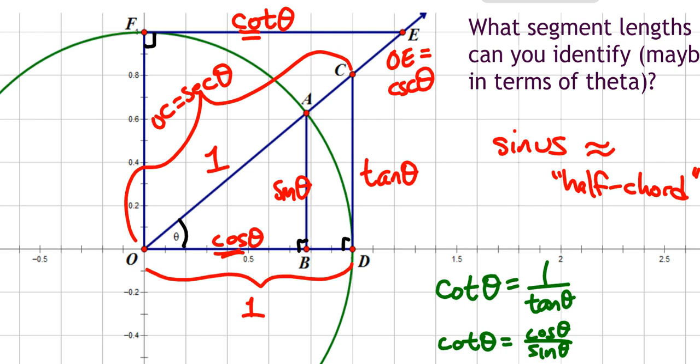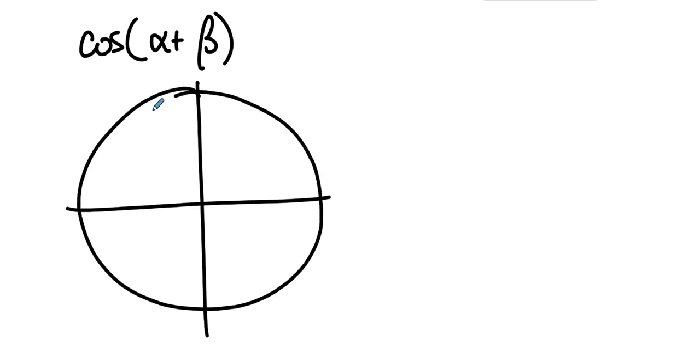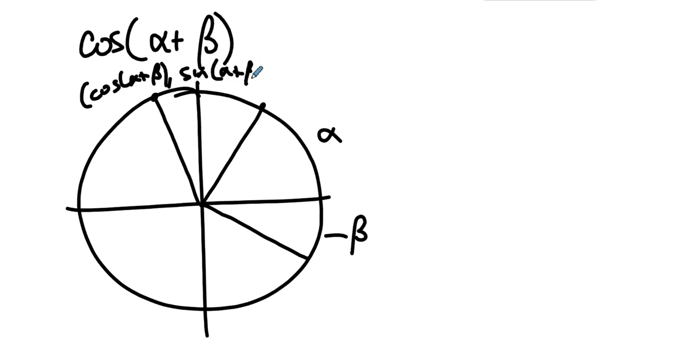Because let's think about it like this. Let's think about something very familiar to us as trigonometers, which is not a word. Let's think about cosine of alpha plus beta. So you have your unit circle. And you have some angle alpha. And you have some angle, let's call this negative beta. So alpha plus beta. So there's beta alpha plus beta is over here.